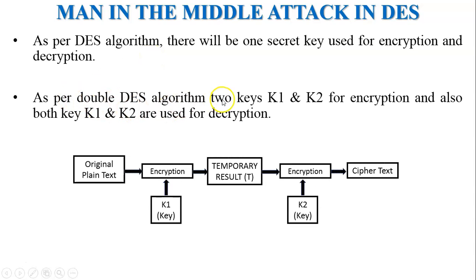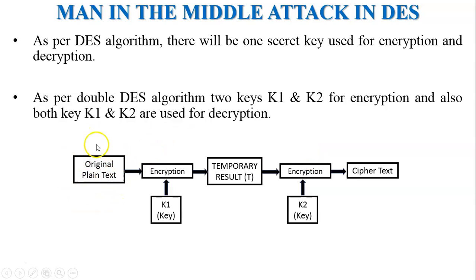In Double DES, two keys — K1 and K2 — are used for the encryption process, and both keys K1 and K2 are also used for the decryption process. As shown in the block diagram, the original plaintext undergoes two encryption processes. First, the original plaintext is encrypted using key K1, generating a first ciphertext — a temporal result T. Then a second DES encryption takes place with input T and key K2, generating ciphertext 2.